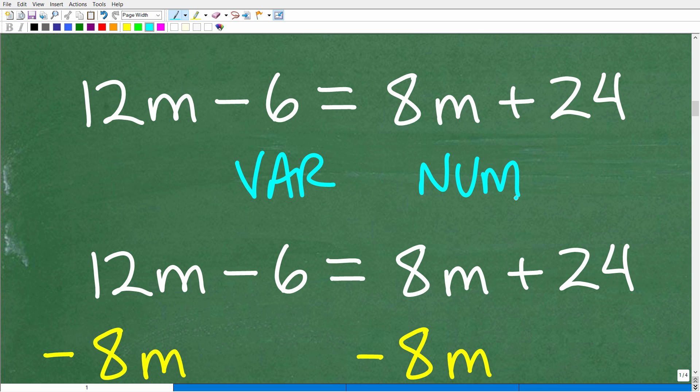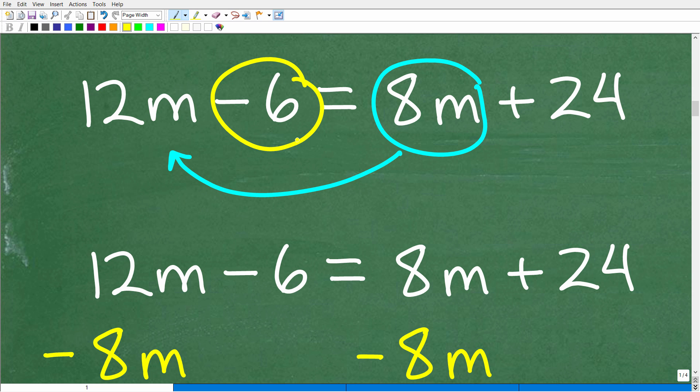So these sides are pretty simplified. So at this point, we need to be thinking about getting all of our variables to the left and all of our numbers to the right. Now, the way we want to do this is just one step at a time. This 8M needs to get over here and linked up with this 12M. And this negative 6 will need to move over with the number on the right-hand side. But we're going to just do this one step at a time.